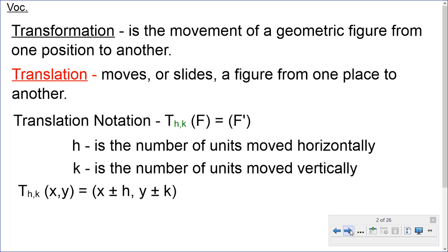Transformation is the movement of a geometric figure from one position to another. Translations move or slide the figure from one place to another place. The translation notation is T for translation, H, K, and whatever the figure or coordinate we're talking about is going to be equal to the new image, F prime. H is the number of units moved horizontally on our X axis, and K is the number of units moved vertically up and down on our Y axis.